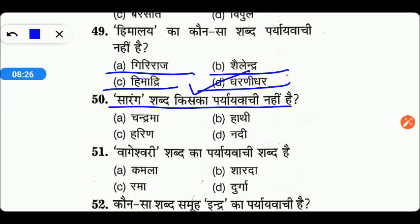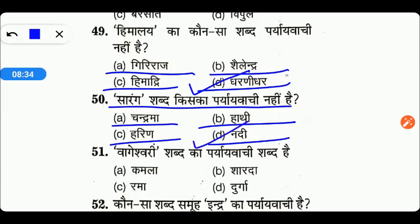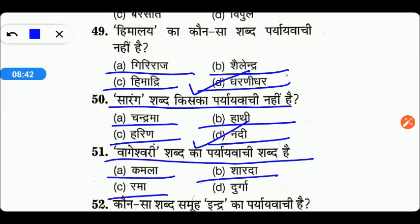Next है: सारंग किस शब्द का पर्यायवाची नहीं है? Options are चंद्रमा, हाथी, हिरण, या फिर नदी। तो friends, यहाँ पर option B हमारा right answer है — Sharada।